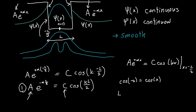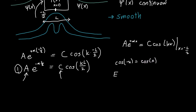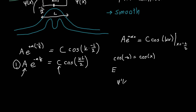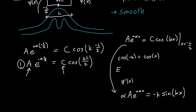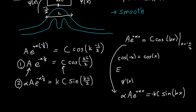We need three equations total because we don't know A, C, or the energy E. We'll get two from the boundary conditions at this interface. The second condition is continuity of the derivative: α·a·e^(+αx) = −k·c·sin(kx). Plugging in x = −L/2, and using the property that sin(−x) = −sin(x), we get: α·A·e^(−αL/2) = k·C·sin(kL/2). That's our second equation.